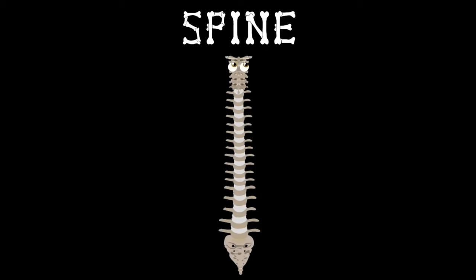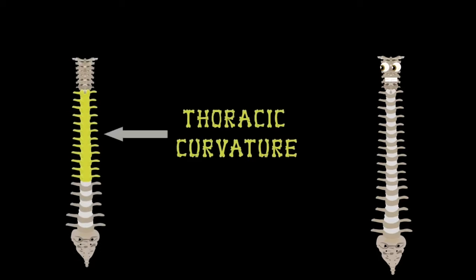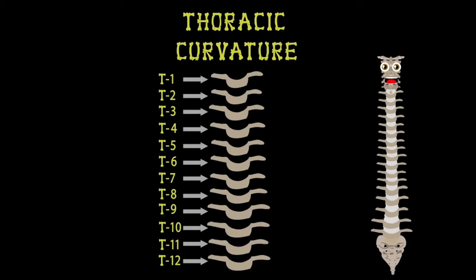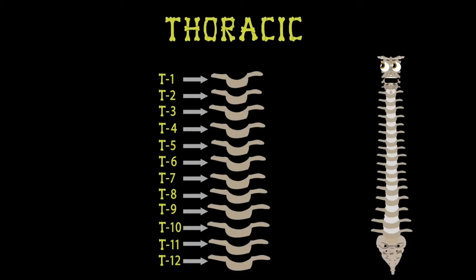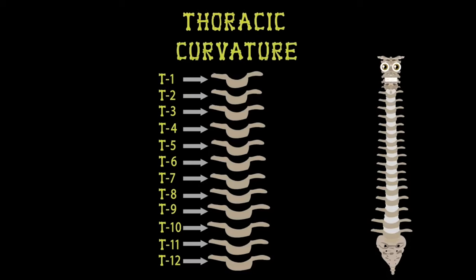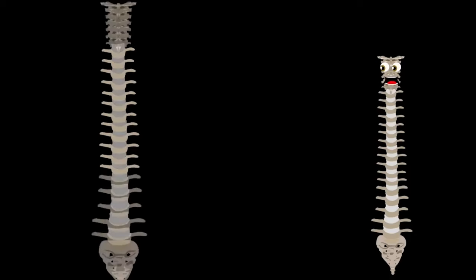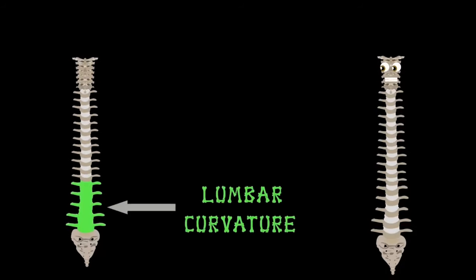The next group of your spine we'll look at is the thoracic curvature — twelve vertebrae intact. Each vertebrae begins with the letter T, which stands for thoracic. T1 through T12 are bigger than the group in your neck, because the spine supports more weight the further down we check.